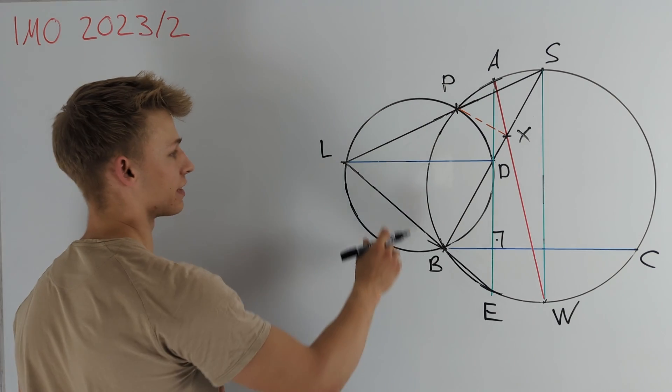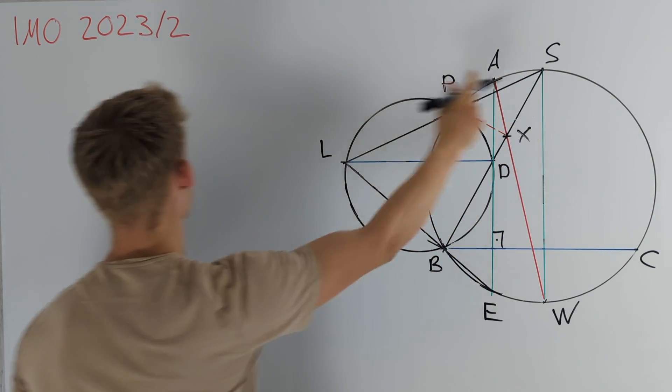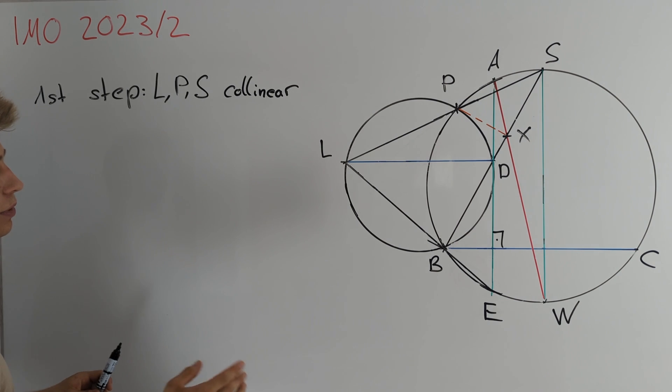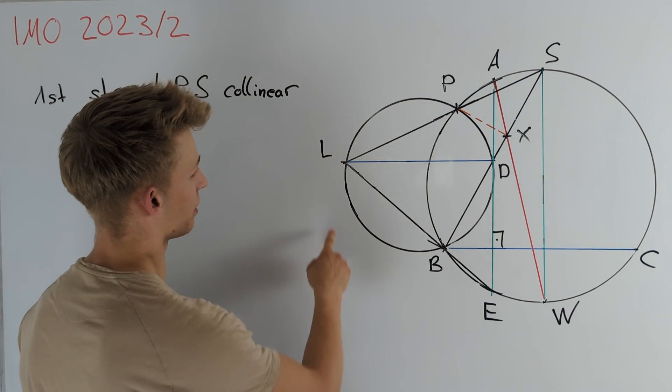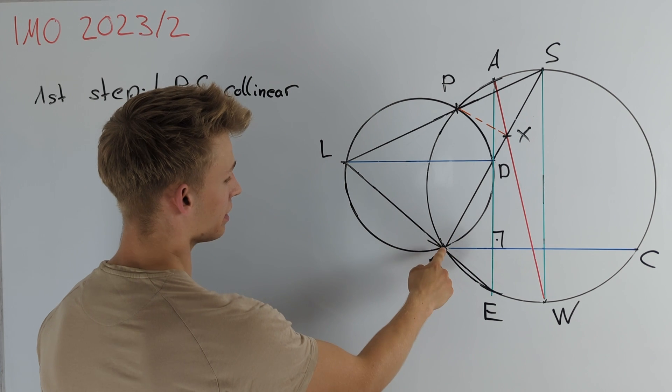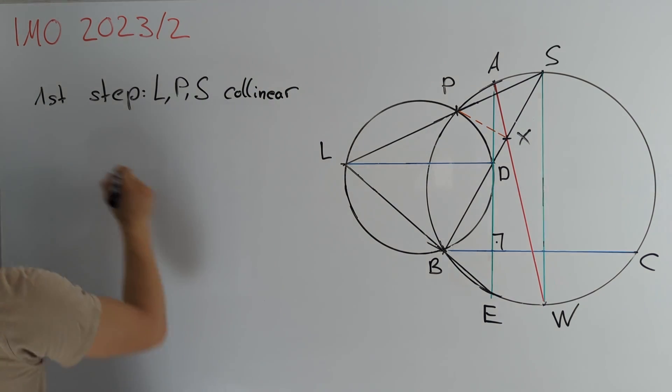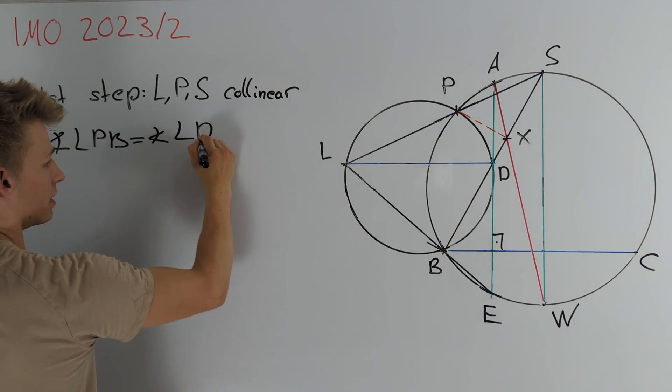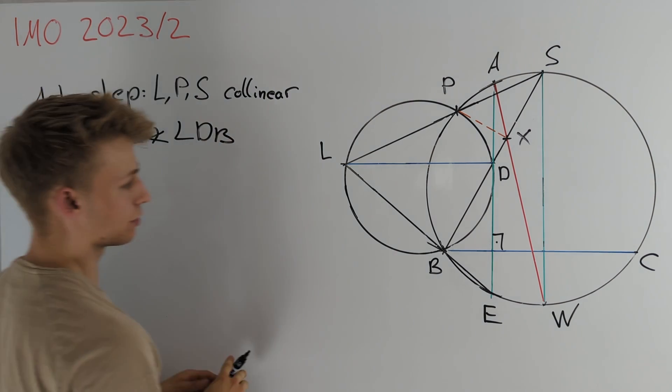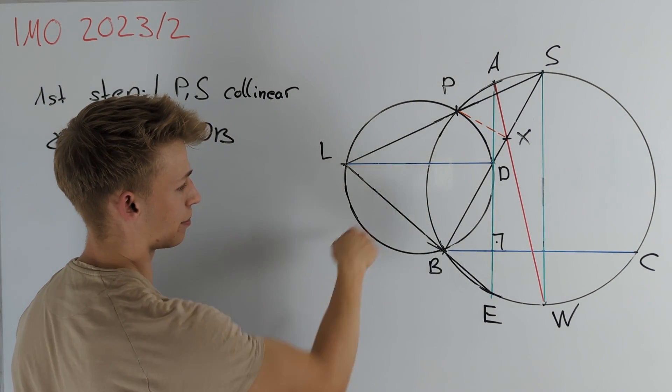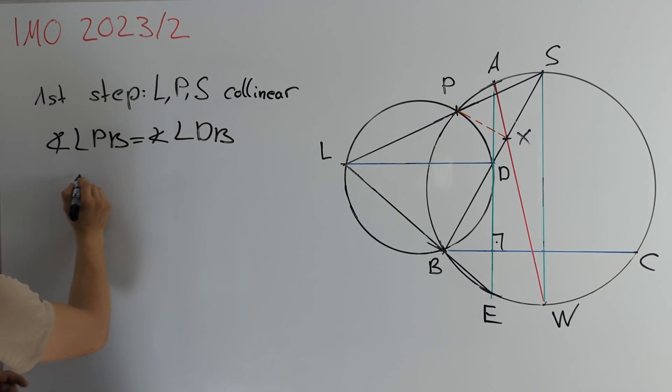Our first step is to prove that the points L, P and S are collinear. To do this we will do an angle chase and we start with the angle LPB and I want to note that I will use oriented angles modulo 180 degrees. We get that angle LPB is equal to angle LDB.